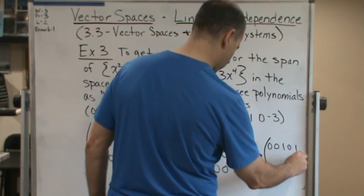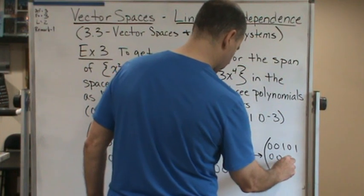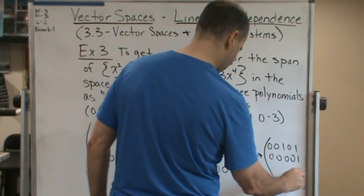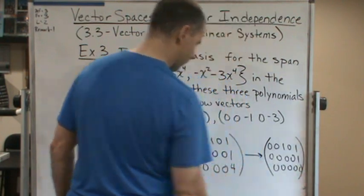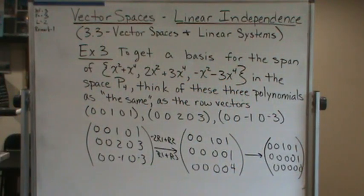So everything's going to stay the same except the 4 is going to go away. So it's going to be 0, 0, 1, 0, 1, then 0, 0, 0, 1, and 0, 0, 0, 0, 0. Okay, so now we're done.